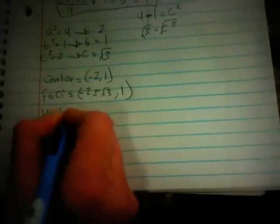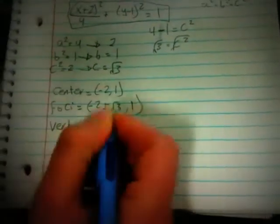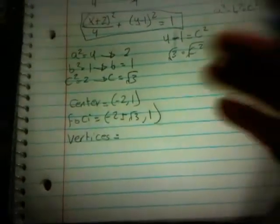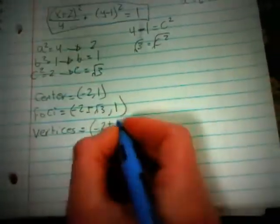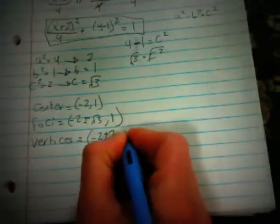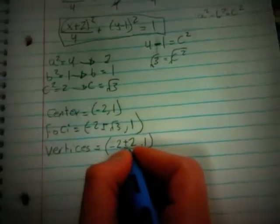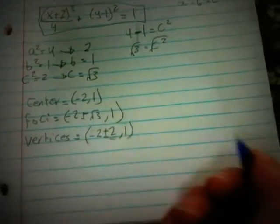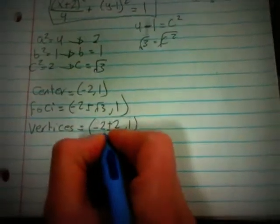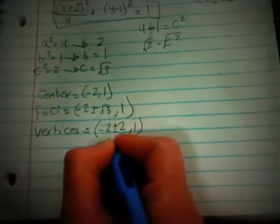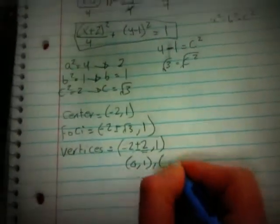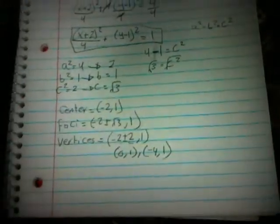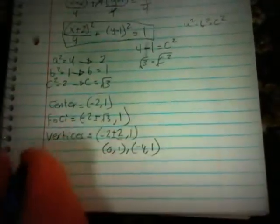Our vertices are equal to (h plus or minus a, k). So we have negative 2 plus or minus 2, to k which is 1. Since a is an exact number, negative 2 plus 2 is 0, giving vertex (0, 1), and negative 2 minus 2 is negative 4, giving vertex (negative 4, 1).